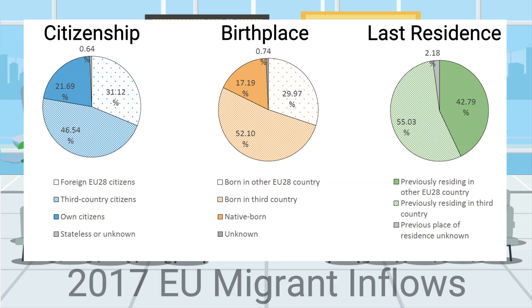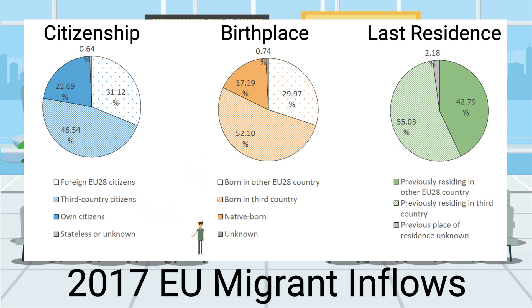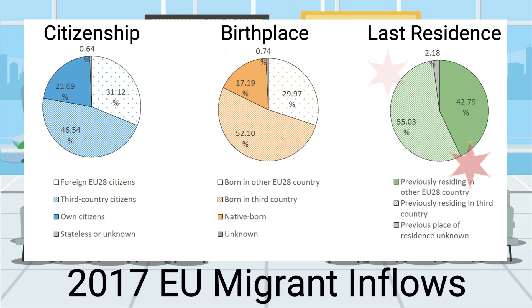Let's pause and look at how these three different disaggregation options can tell wildly different stories. What we're looking at here are immigrant flows presented in a 2017 EU REMINDER project report. The EU 28 are the pre-Brexit European Union member states, and third countries would be any other country in the world. There are slight differences between the first two pie charts, but the third one primarily measures just two variables, since it's impossible for your country of previous residence to be your migration destination.